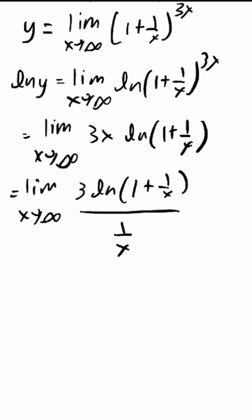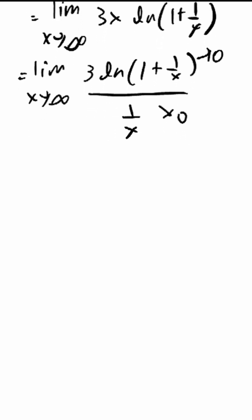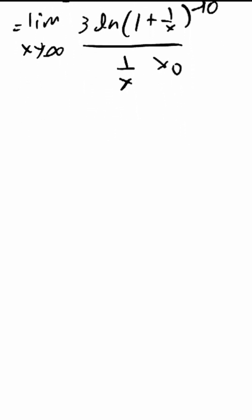Remember this is the same thing, we just made this x in the denominator but we flipped it. Now we can see that both the numerator and the denominator will go to zero, meaning that this is an indeterminate form that we have forced, and now we can use L'Hopital's rule.